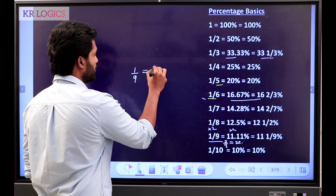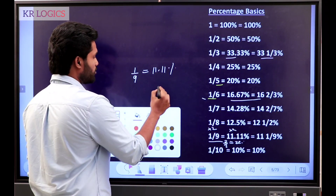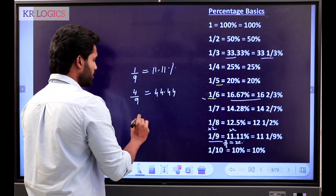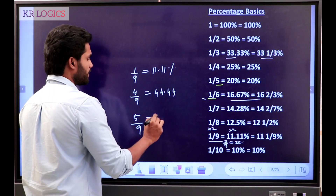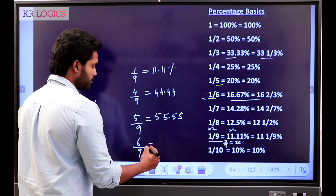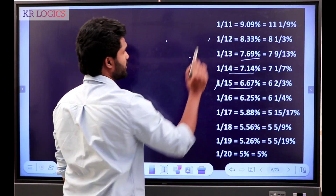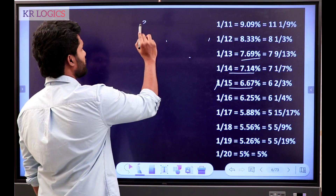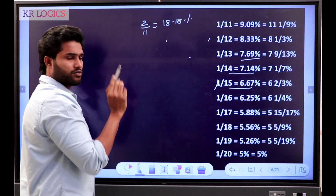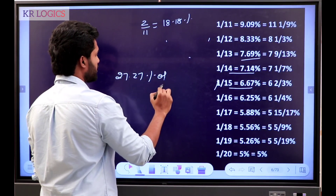1 by 9 is 11.11. Multiple 2 is 22.22. 4 by 9 is 44.44. 5 by 9 is 55.55. 6 by 9 is 66. 2 by 11 is 18.18%. That exam is your number. 27.27 percentage of...